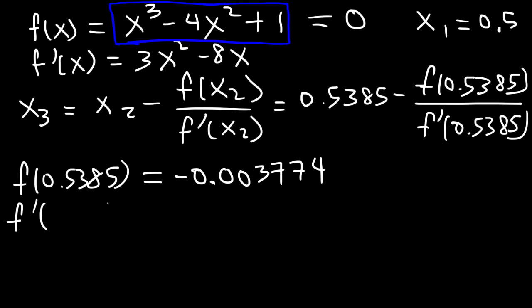And now let's do the same for the first derivative. So we're going to plug it in to this equation. So it's going to be 3 times 0.5385 squared minus 8 times 0.5385. So you should get negative 3.4381.